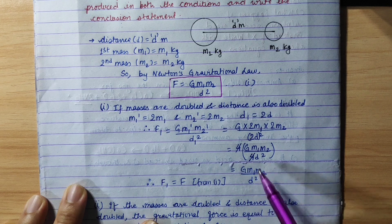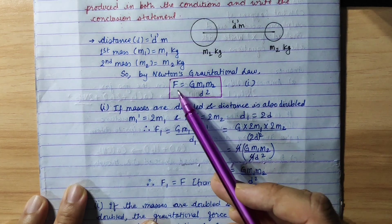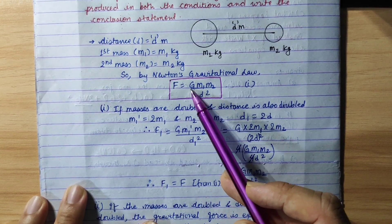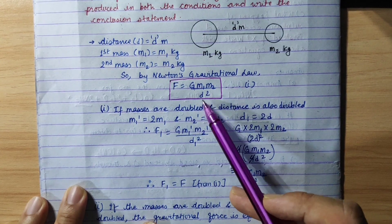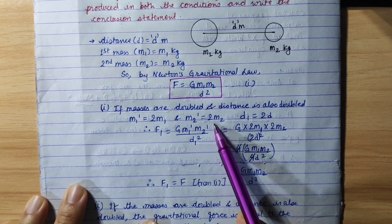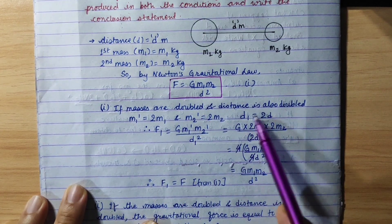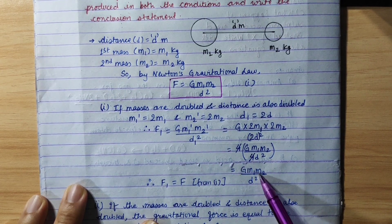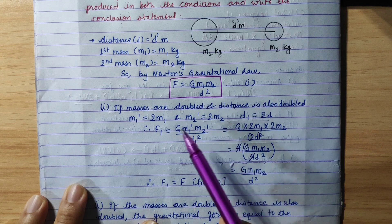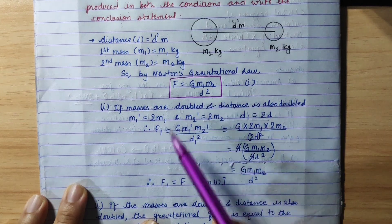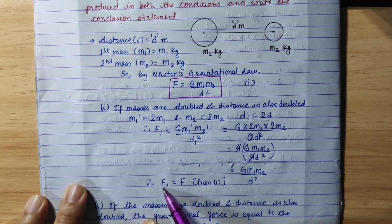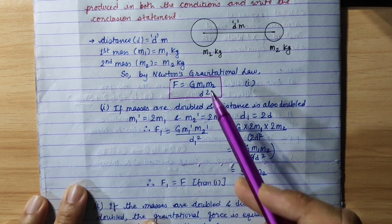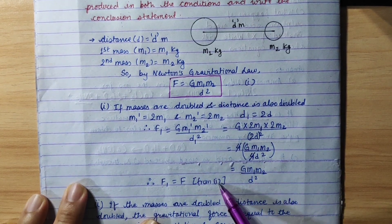So we can see the result. In the first condition, the gravitational force is G·m1·m2 / d². When we double both masses and double the distance, the new gravitational force F1 is equal to the original gravitational force.